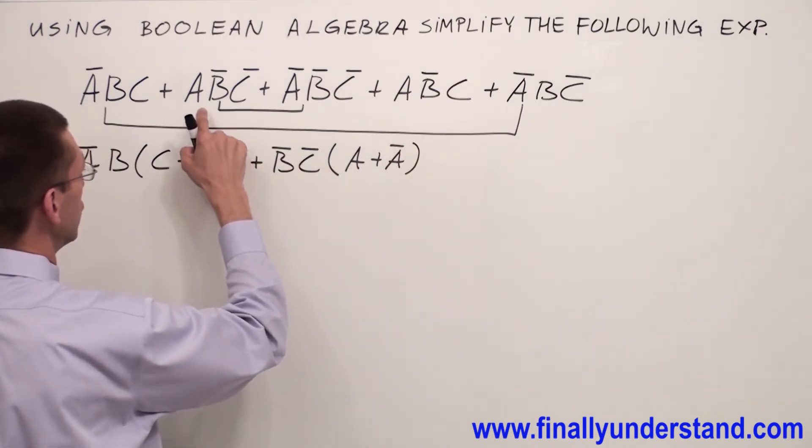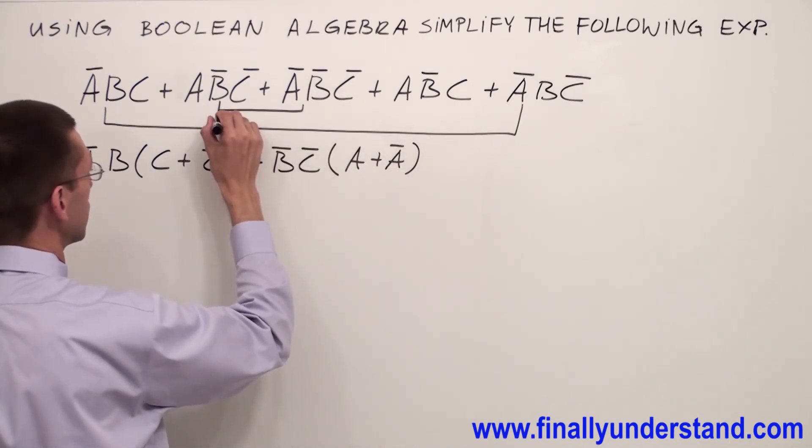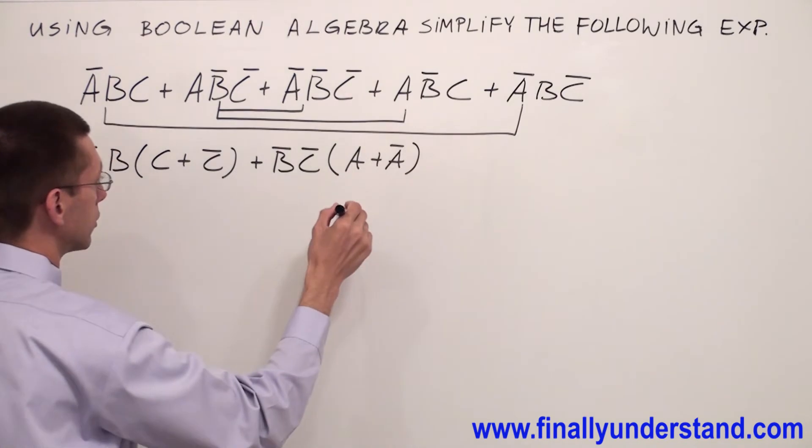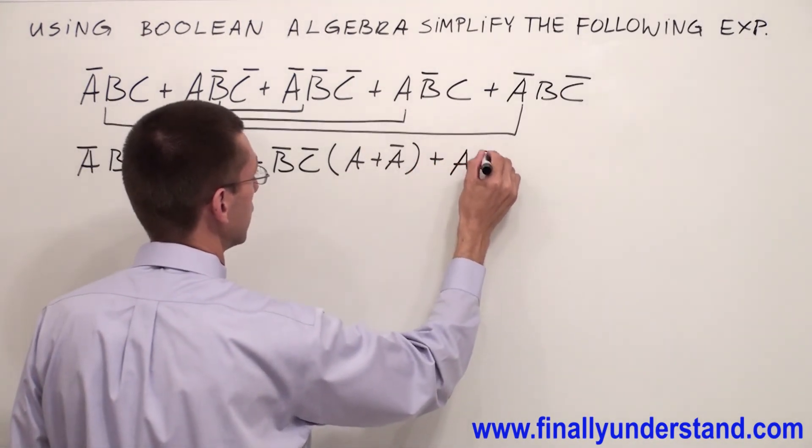From these two terms I can factorize A, B' or A, B'. Inside of the parentheses I'm going to have C' or C.